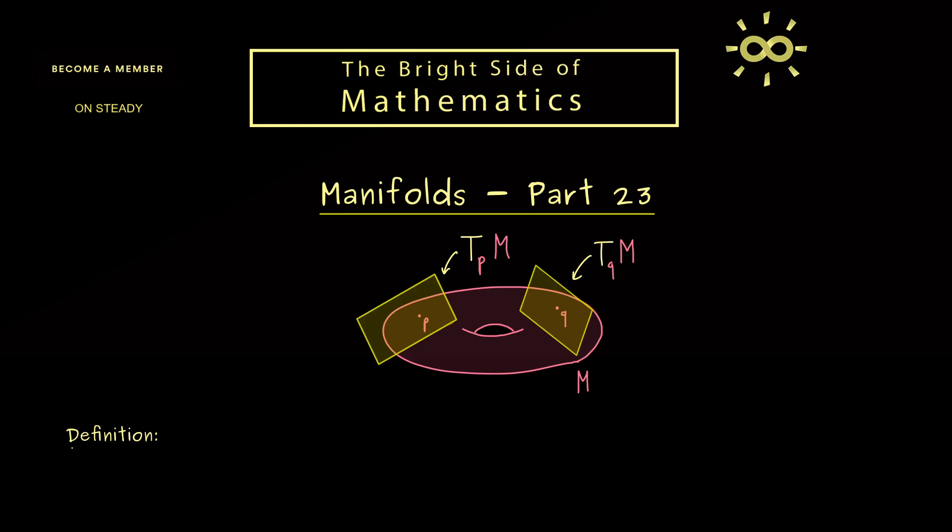One has a special definition for putting all tangent spaces together, and the name is very fitting. We call it the tangent bundle, with notation TM. There's no mentioning of the point anymore because we go over all the points together in the disjoint union. Some use a dot in the union symbol. By definition, the abstract tangent spaces are disjoint anyway. However, if you use our submanifold tangent space definition, this claim is not true anymore. Therefore, it's always better to use a formal disjoint union.